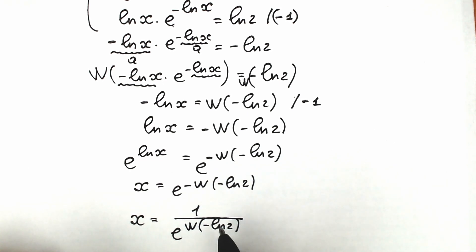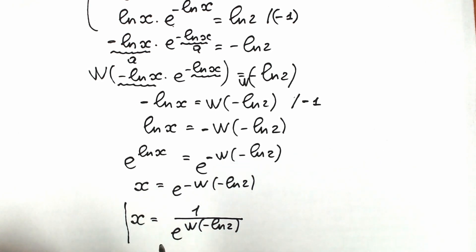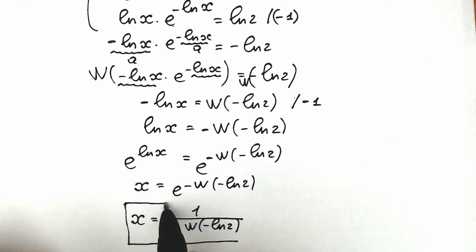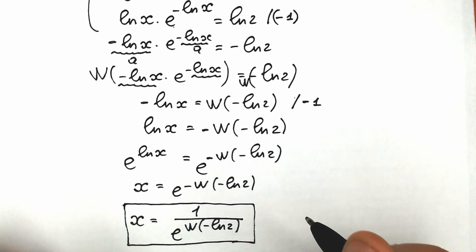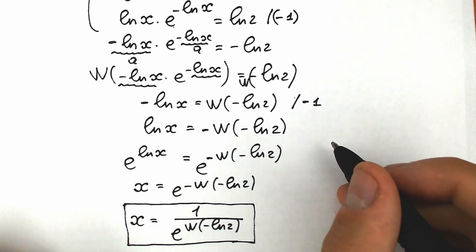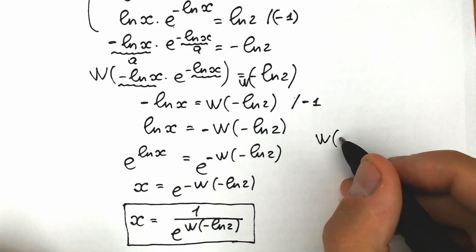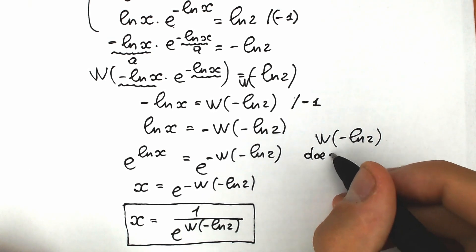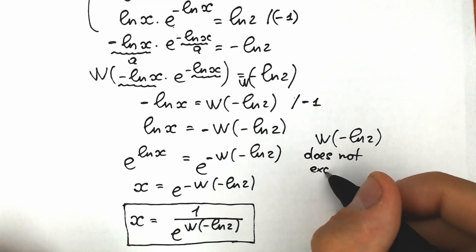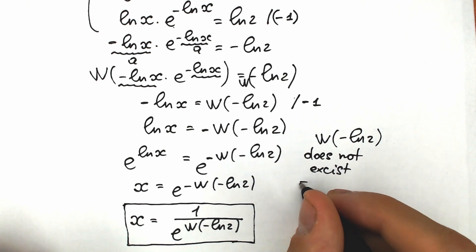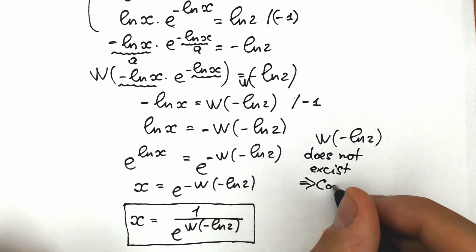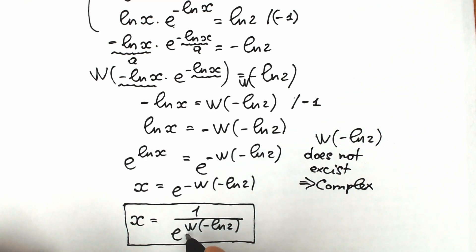Right now, the Lambert W function of this expression is a constant, and e to the power of a constant is a constant, so there are no variables here — this is our solution to this challenge. However, a lot of students get confused because when they check the Lambert W function in a calculator, Lambert W of minus natural log 2 does not exist as a real value. So as a result, this is a complex number. Lambert W at this point gives a complex value, and therefore e to the power of a complex number is also complex.